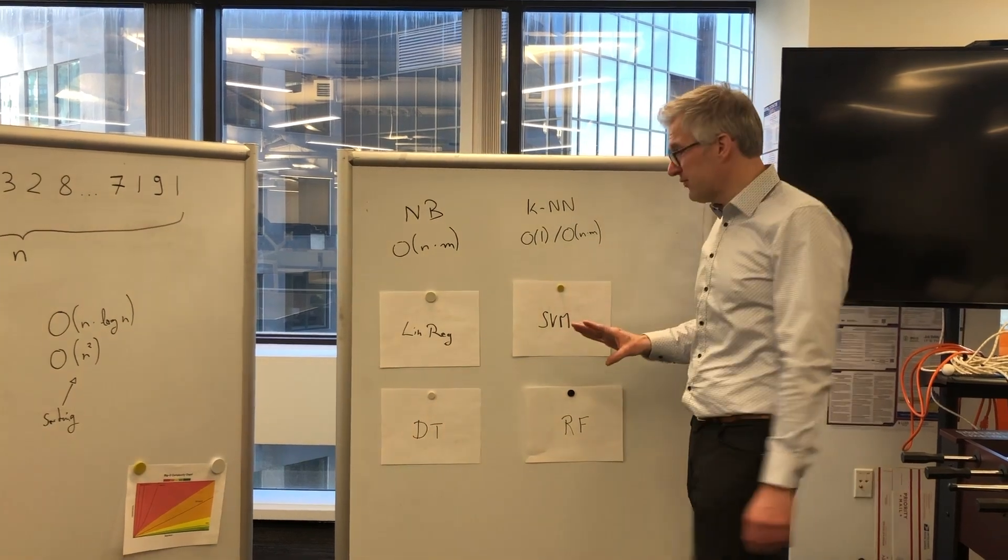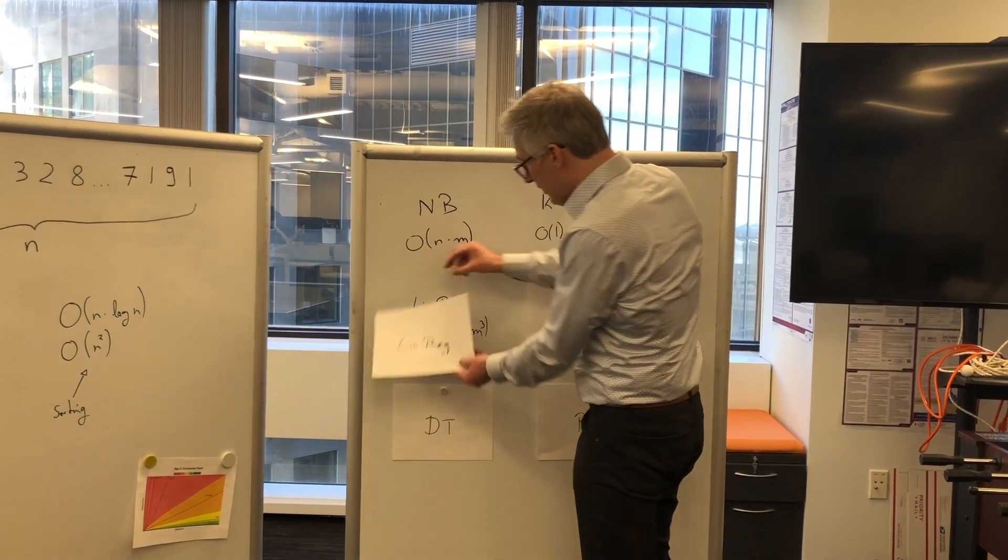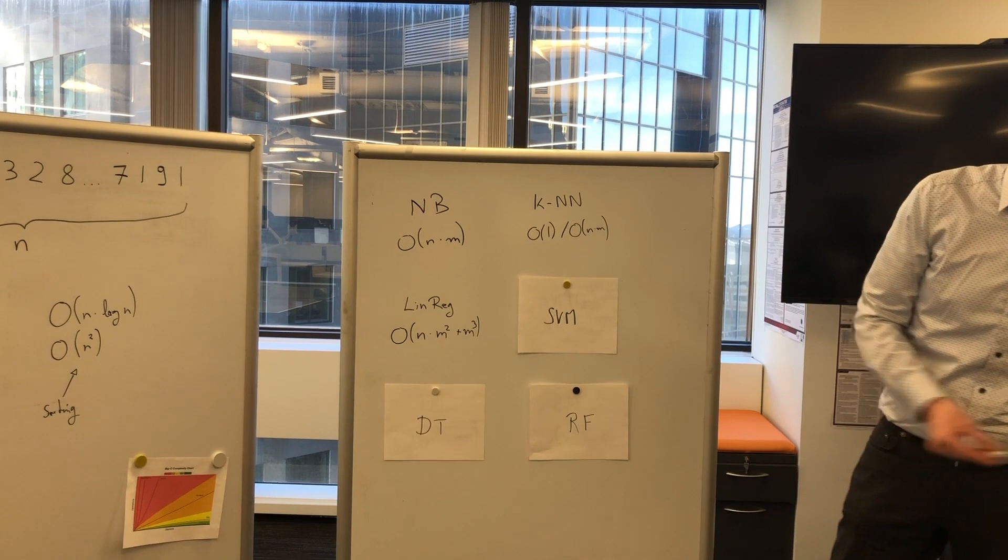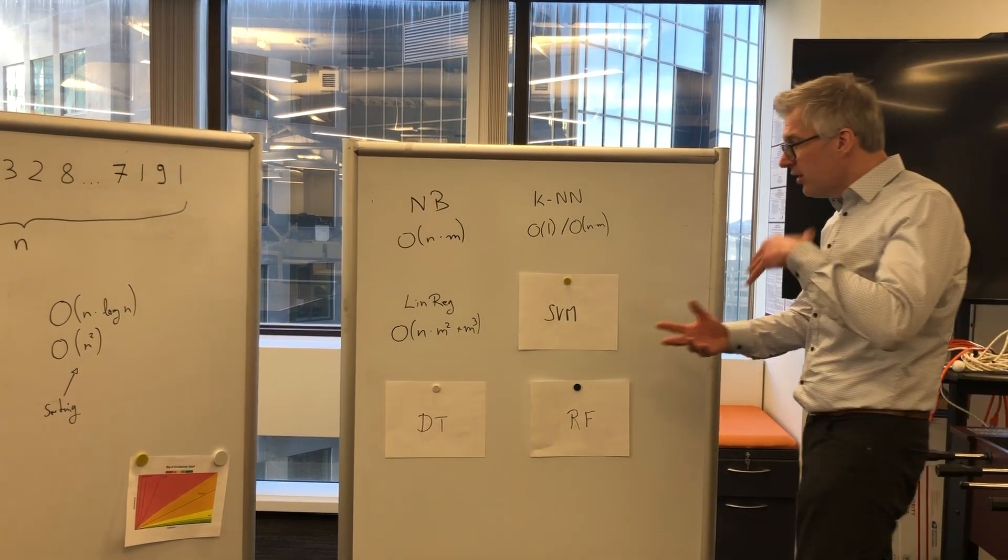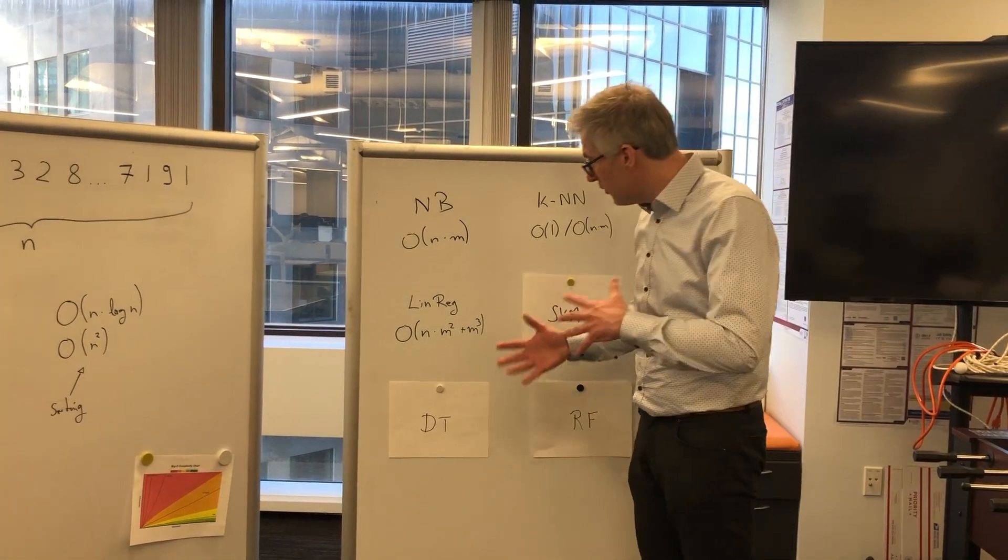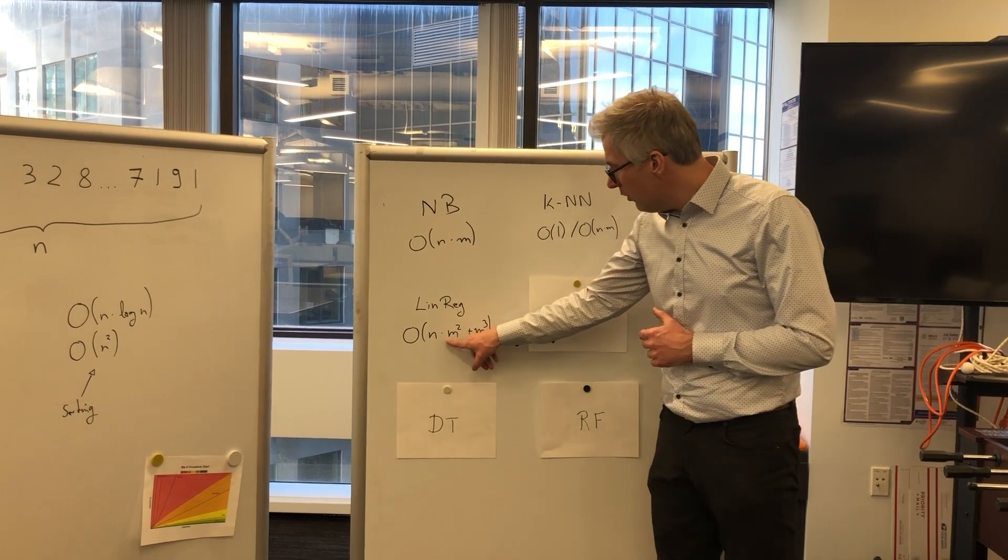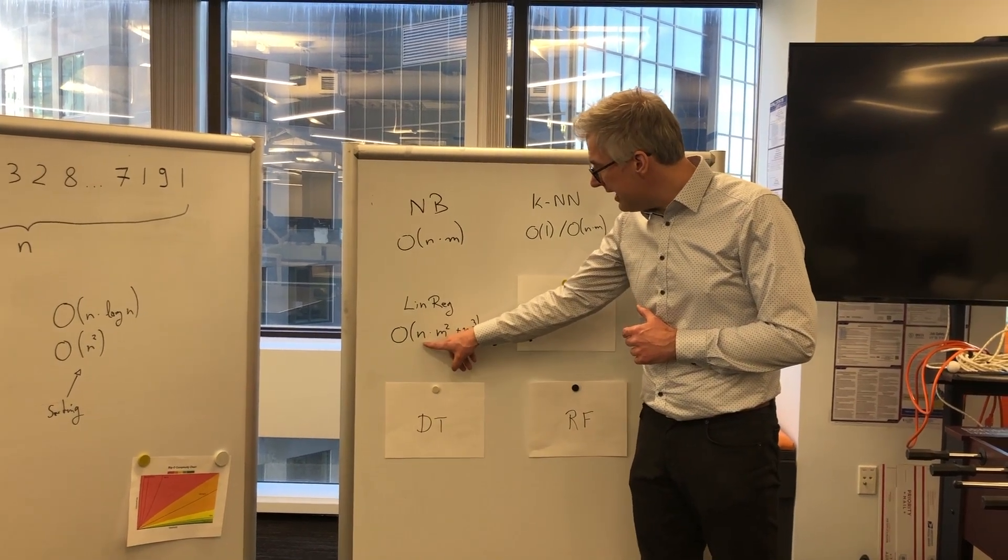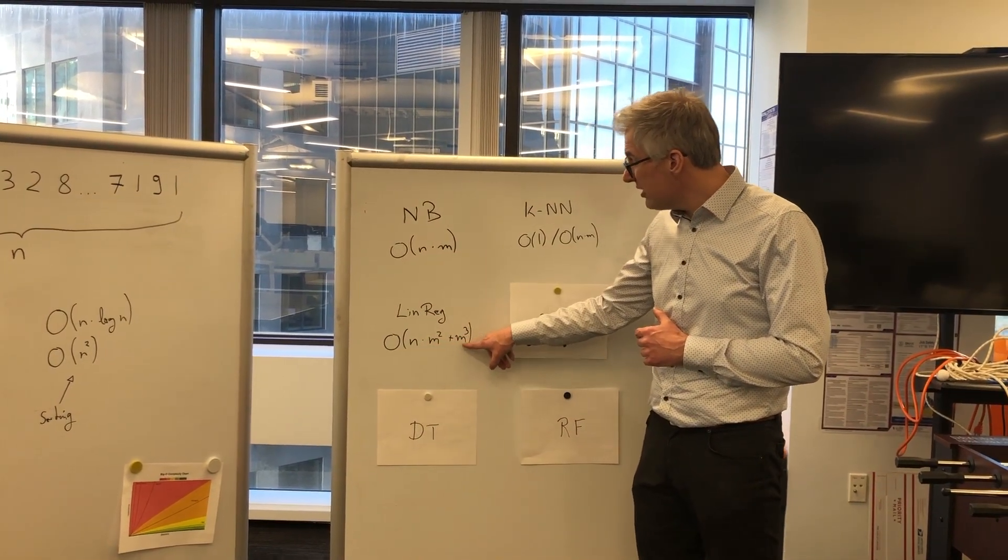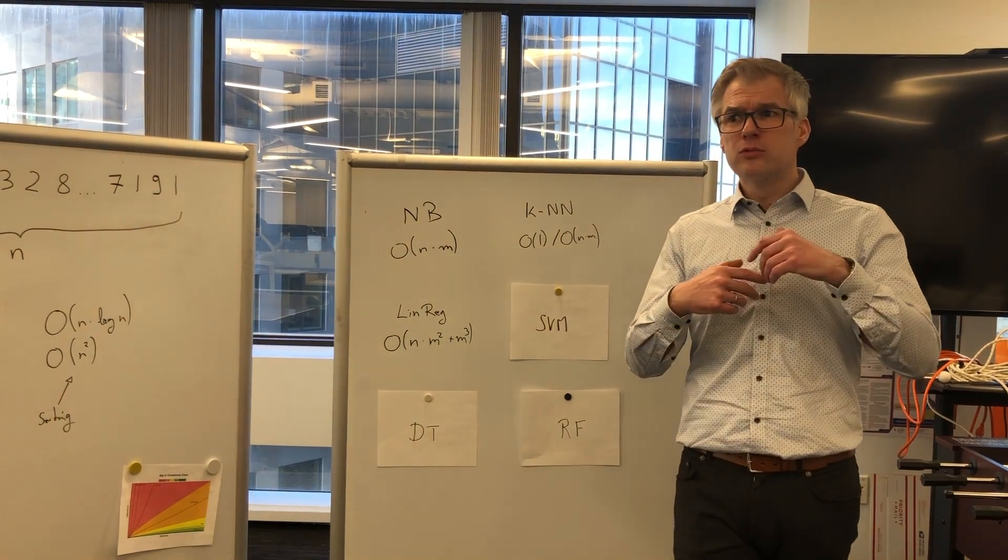Things get unfortunately a bit worse from here. So in case you wonder why those things take too long, here are a couple of reasons. Linear regression has a lot of matrix multiplications and inverses involved. So for n rows and m columns, it takes n times m squared plus m to the power of 3.